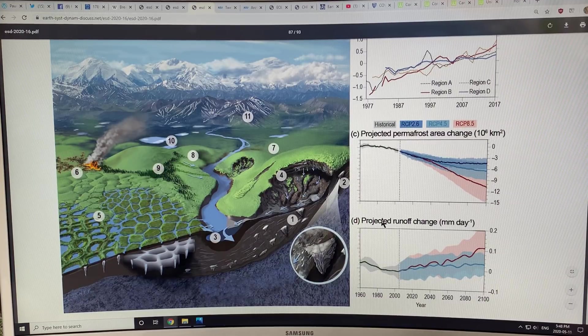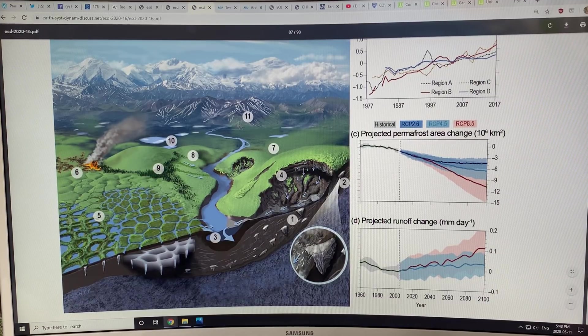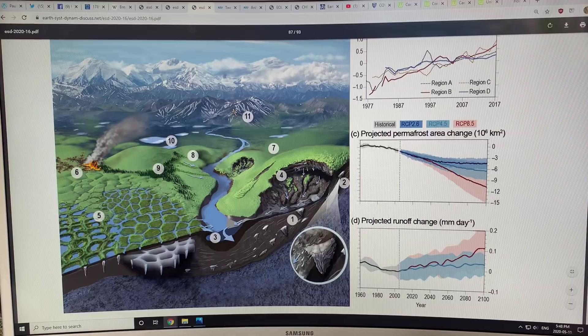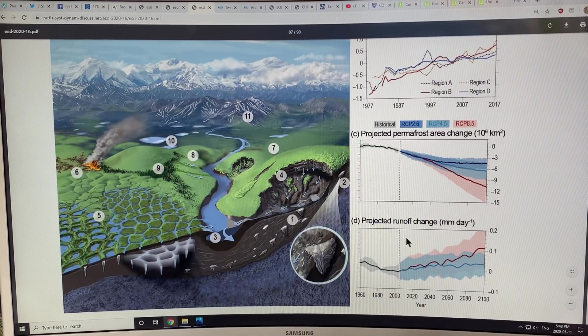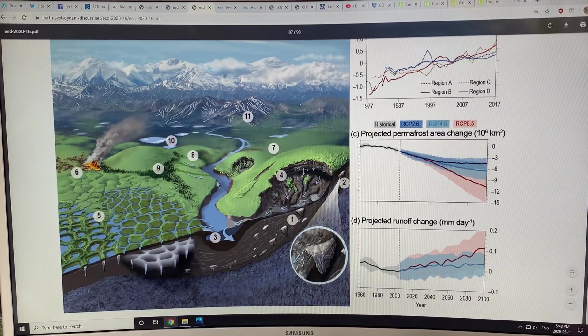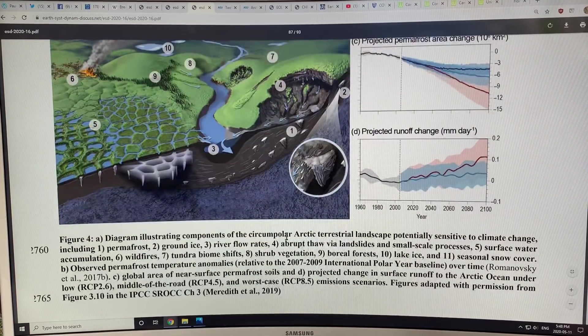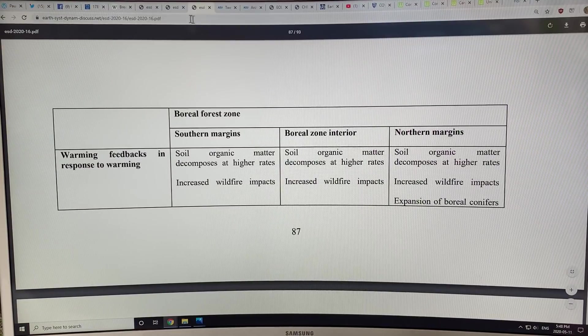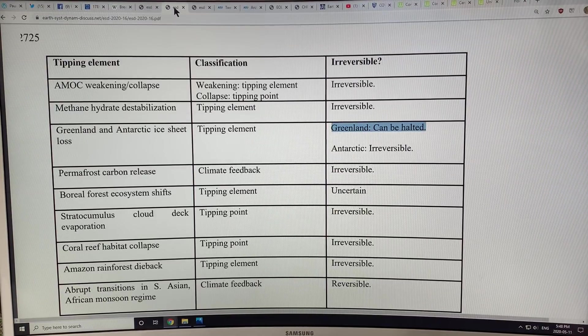As the whole northern region warms, you get more snow melt and more runoff. The runoff is increasing, and that also melts the permafrost underneath the ground. So that's that tipping element.